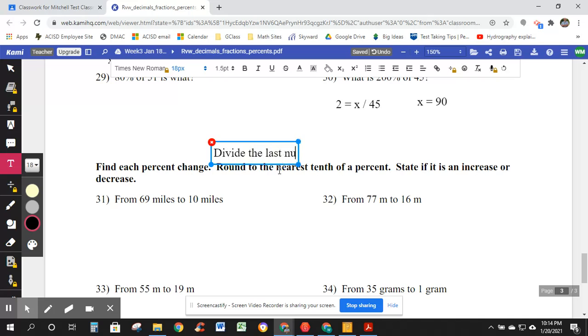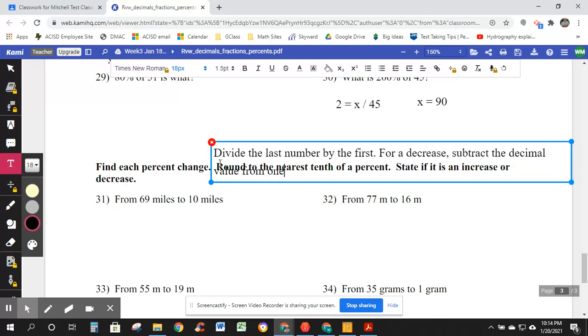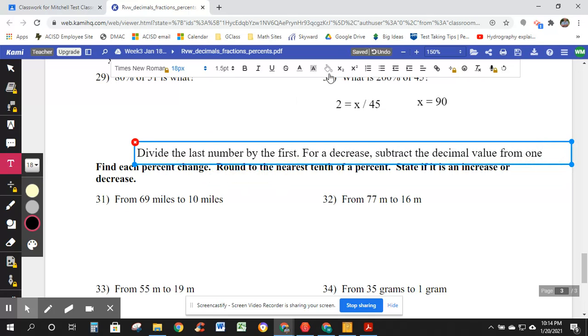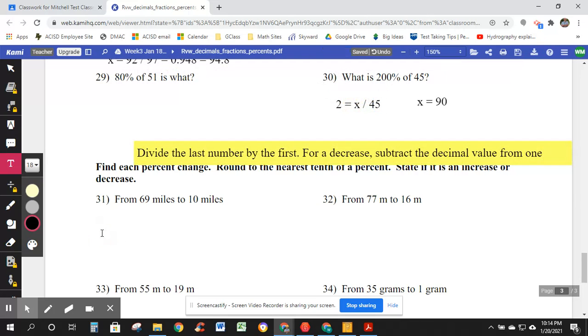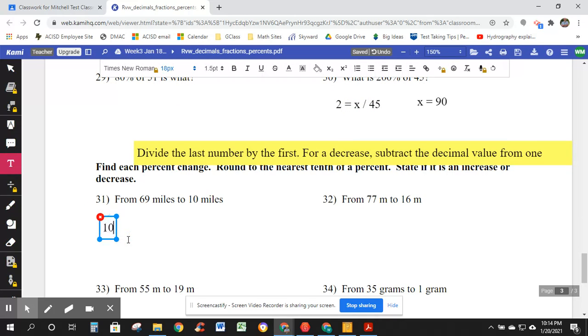Divide the last number by the first. Similar to above. For decrease, for decrease, subtract the decimal value from one. And I give it to the color so it pops at you. Divide the last. Divide by 69. From 69 miles to 10 miles. Well, I can tell you right now, that's a decrease. And look, I think they're all decreases here. So this is a decrease.